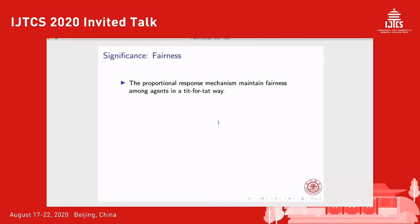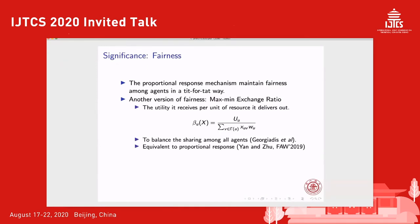We focus on this mechanism because it has a very good property: it maintains fairness among agents in a tit-for-tat way. There is another common way to define fairness among resource sharing problems called max-min fairness, defined on a concept called the exchange ratio, which is the utility an agent receives per unit of his resource. An allocation is called max-min fair if the minimal exchange ratio among all agents is maximized. We have shown that such fairness is exactly equivalent to the results of the proportional response.